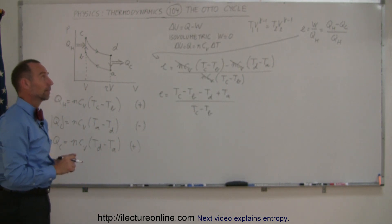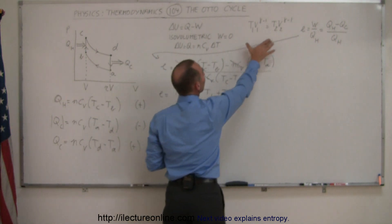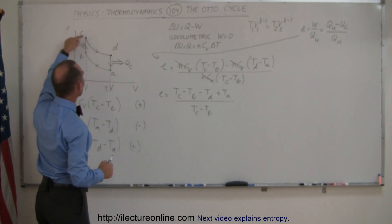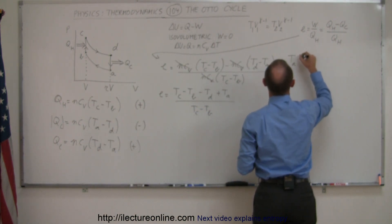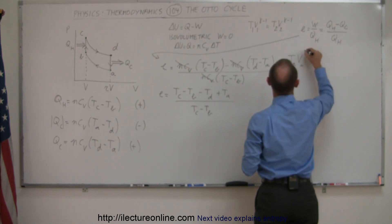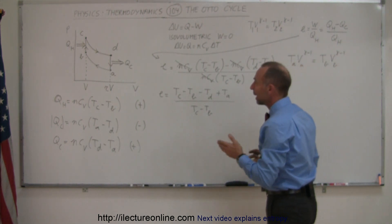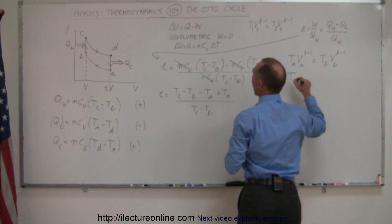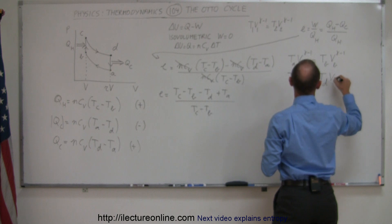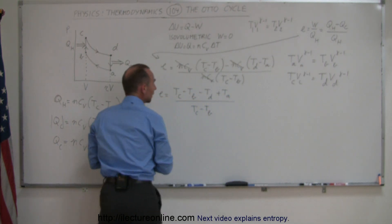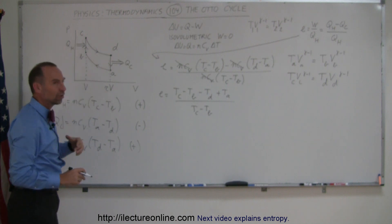We're halfway there, because now we have to take into account the two adiabatic processes, which relate temperature and volume using this equation. We use that equation for the adiabatic process going from C to D and from A to B. For A to B: T_A times V_A to the (gamma minus 1) equals T_B times V_B to the (gamma minus 1). Likewise for C to D: T_C times V_C to the (gamma minus 1) equals T_D times V_D to the (gamma minus 1).